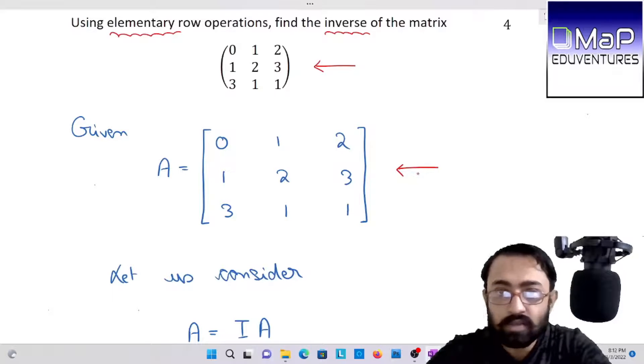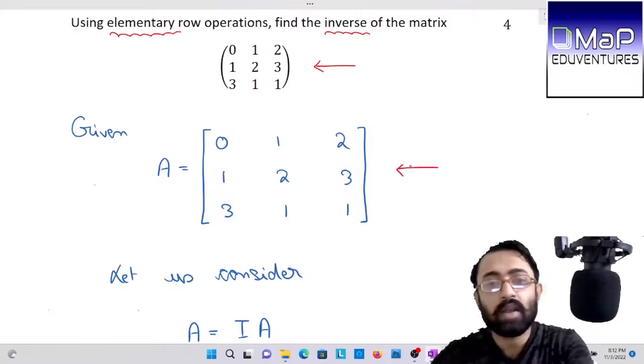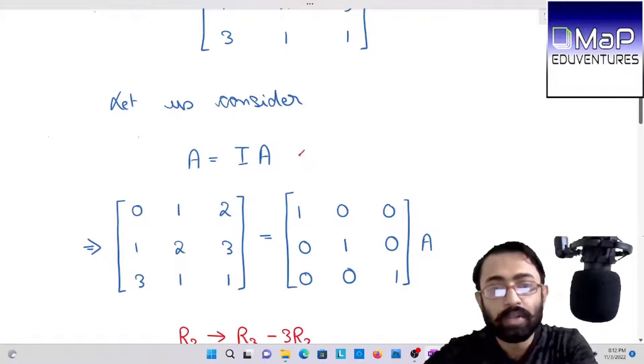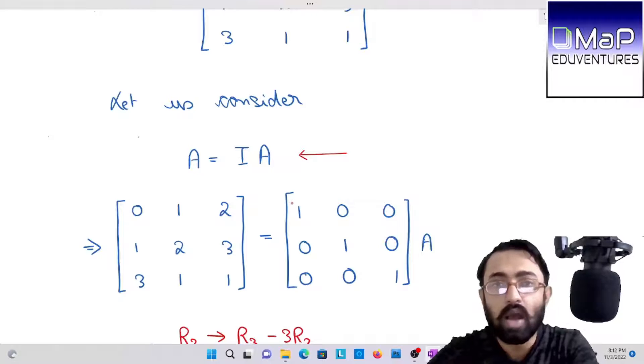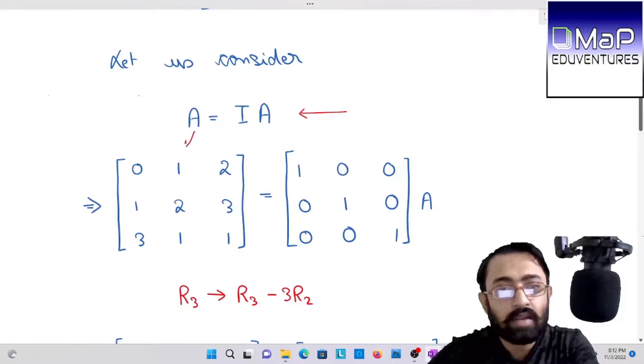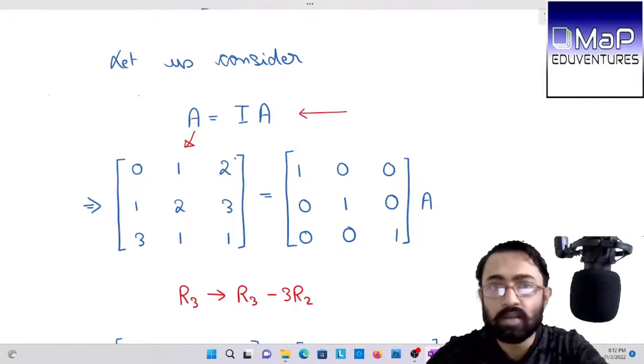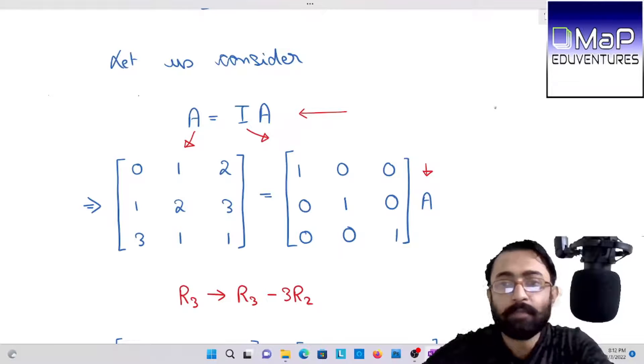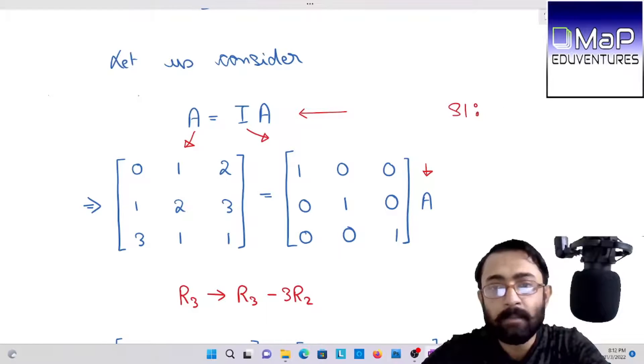Starting with the given matrix. When we have to find inverse of the matrix within row operation, row operation we have to consider A equals to I. So A equals to I, the left-hand side A matrix and on the right-hand side identity matrix.